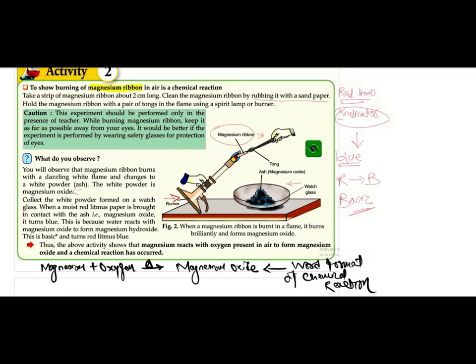Then burning of magnesium ribbon also formed ash or a grayish powder, which was magnesium oxide — a new substance. This was tested with the help of an indicator: the red indicator turned blue, which shows that the new substance is basic in nature.